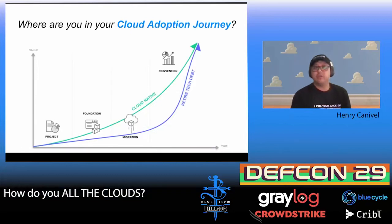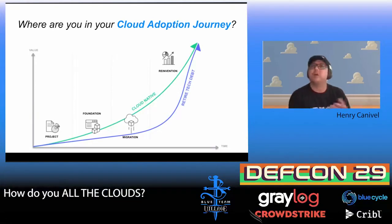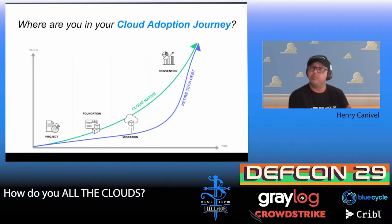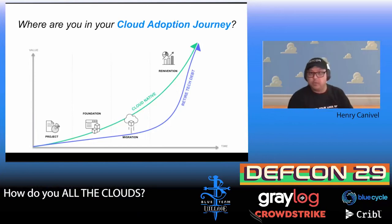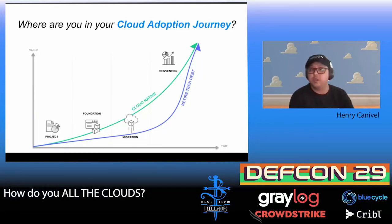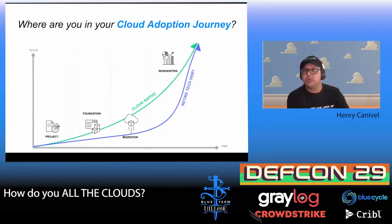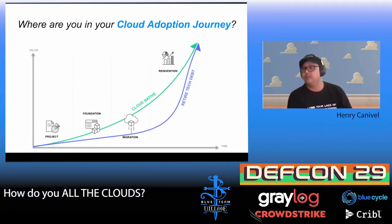When you talk about the cloud adoption journey, we have these areas: projects — typically a proof of concept where you want to run an idea somewhere and show you're capable of running an application in a new environment. Foundation is pretty much like a lift and shift, moving to cloud but the application is still kind of running as before — it's the basis of your enterprise applications. Migration is about how much of your application's dependencies are using cloud services, though the application may not necessarily be aware of it. And finally, reinvention — rebuilding the application itself.